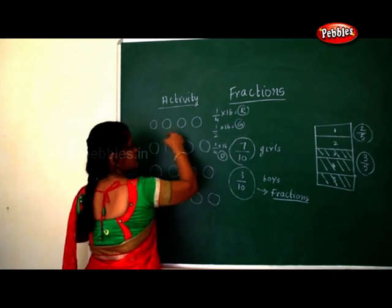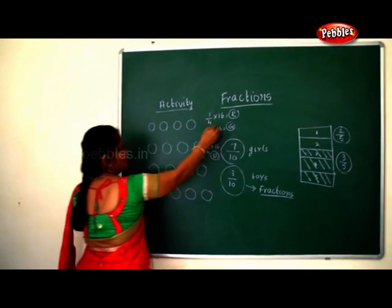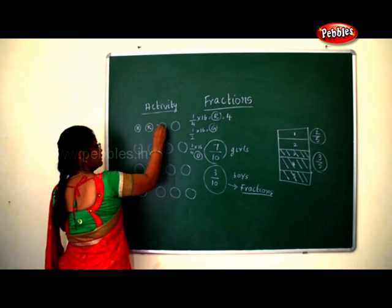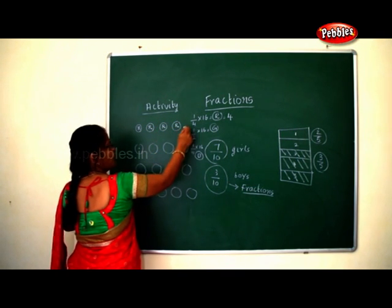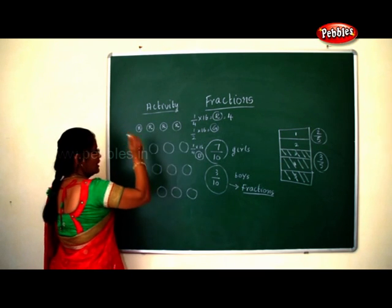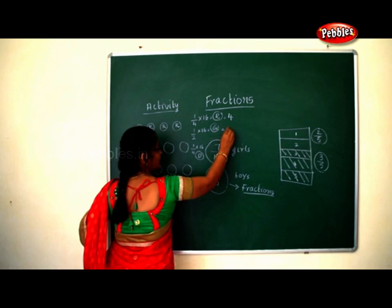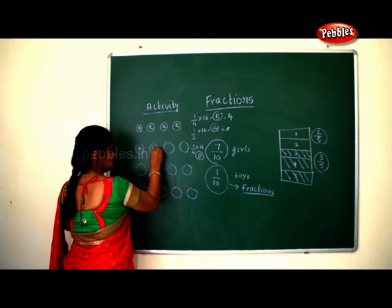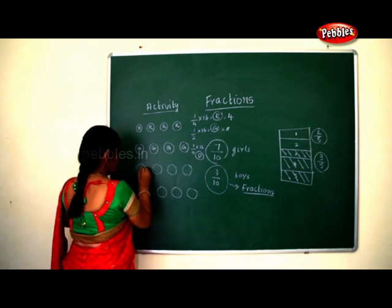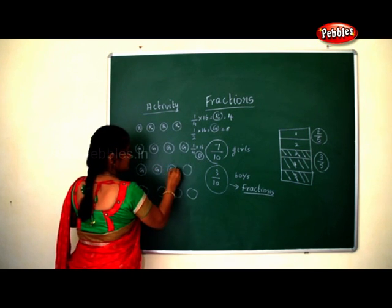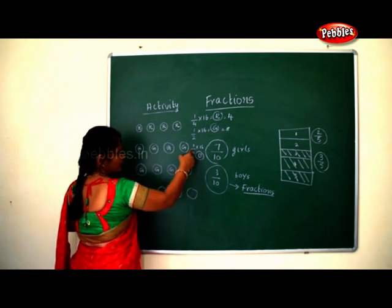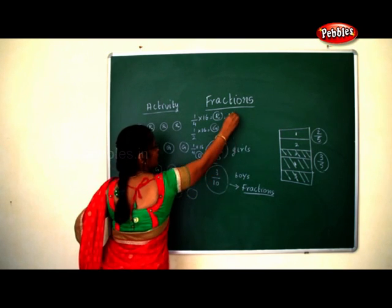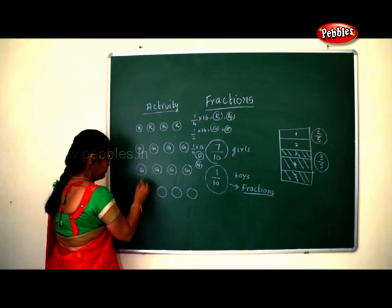One by four of sixteen circles, color with red. One by four of sixteen is four, so four circles colored red. Now half of sixteen is eight, so those eight circles colored with green. And one by four of sixteen is four — those four circles colored with blue.